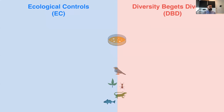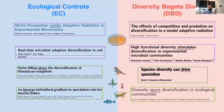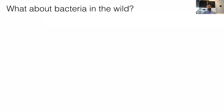People have studied EC versus DVD in a range of systems. From experimental evolution using microbes, depending on the system and experimental setup, we can get evidence for EC or DVD — conflicting results. Similarly, studies of plants and animals in nature have found varying evidence for one or the other model. The question I'm going to consider today is: what about bacteria in the wild? This represents the majority of genetic diversity on Earth, and so this might be the ultimate test — to what extent does diversity beget diversity in the wild?